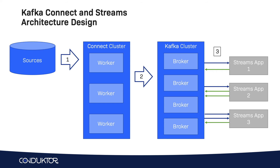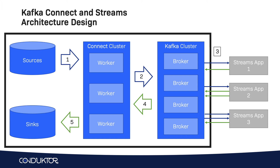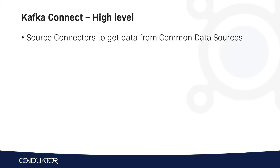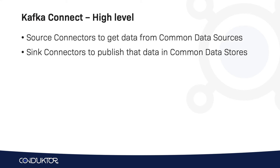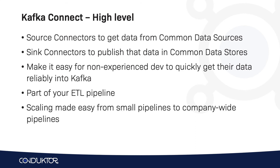It is very common as a pattern to use a Kafka Streams application to do stream processing and to transform the data in real-time in your Kafka cluster. When it comes to exporting the data from Kafka into your sinks, it will go again through the Kafka Connect cluster into the target sink. Source connectors get data from common data sources, and sink connectors publish data into common data stores. This makes it super easy for non-experienced developers to quickly get data reliably into Kafka as part of your ETL pipeline. Scaling is also very easy because Kafka Connect has a scaling mechanism where you can add tasks to parallelize your Kafka connectors.